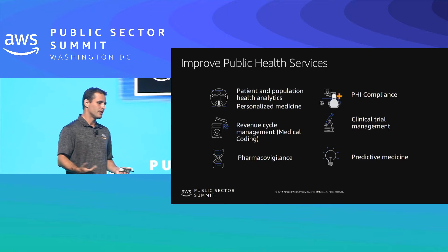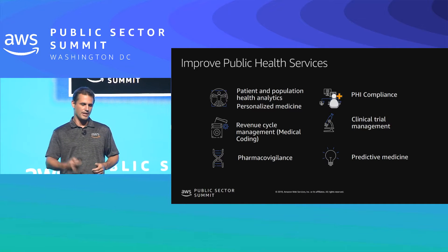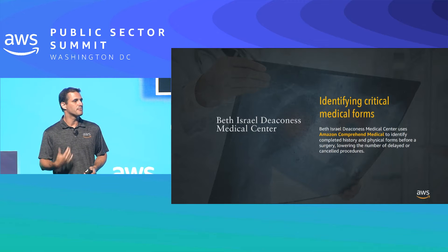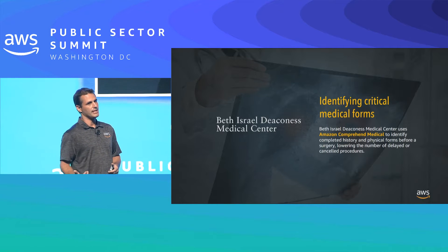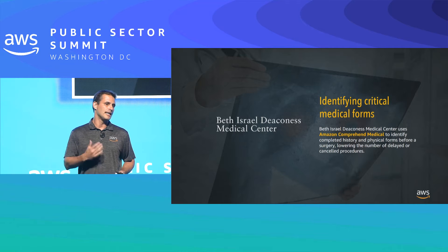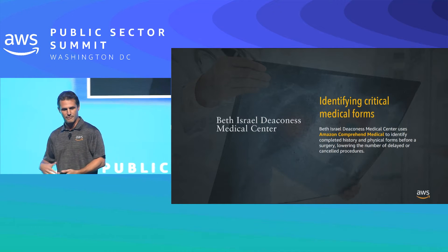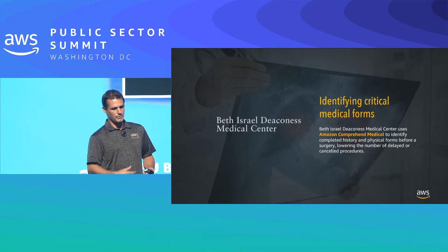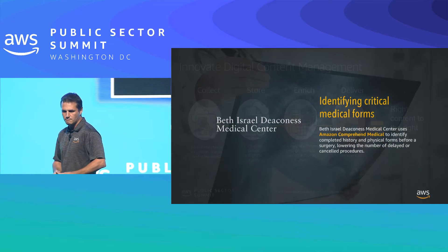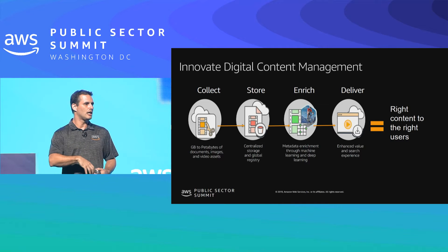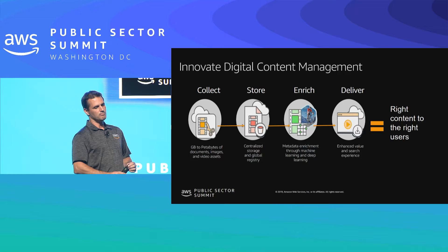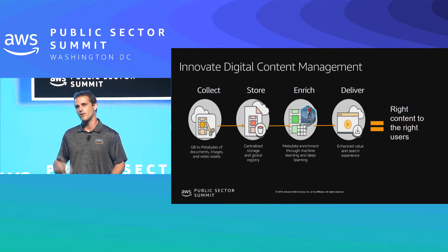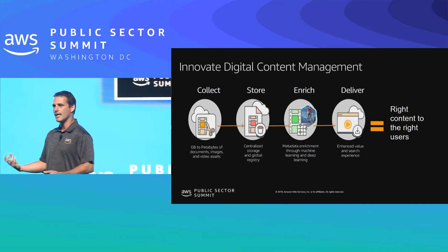Another example is improving public health services. Beth Israel Medical Center is leveraging Amazon Comprehend to speed up detection of forms that need to be validated — to understand which forms are going to be delayed or canceled — using natural language processing. We're going to be showing some demos of Comprehend Medical in a few moments. They're leveraging Comprehend Medical to identify forms and which ones will be delayed or canceled.